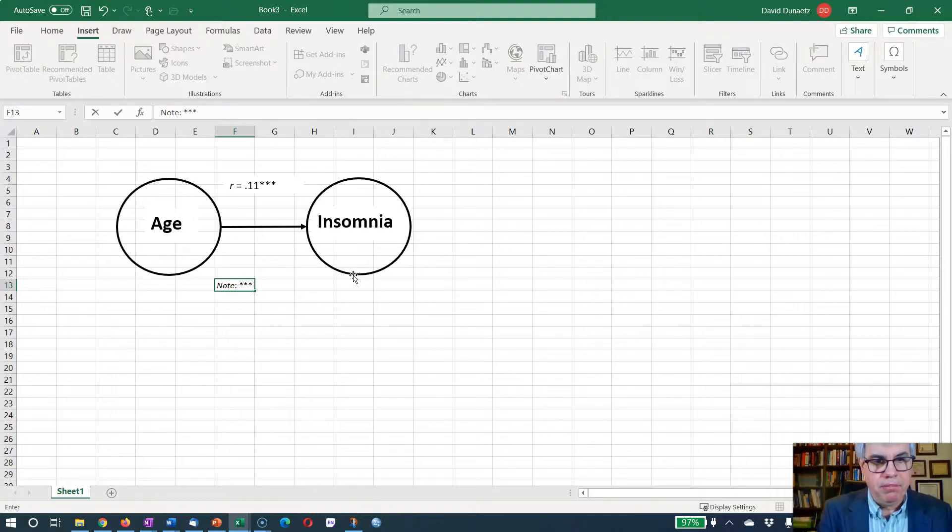Now I'm going to insert another text box. I'm going to put my r up here. So Ctrl I, r, Ctrl I, space equals 0.11 and three stars. Now I'm going to select that, make that a little bit bigger. I'll click up the font size there. And let's get rid of that outline. I click on no outline. It remembers that. Okay, so that's down there.